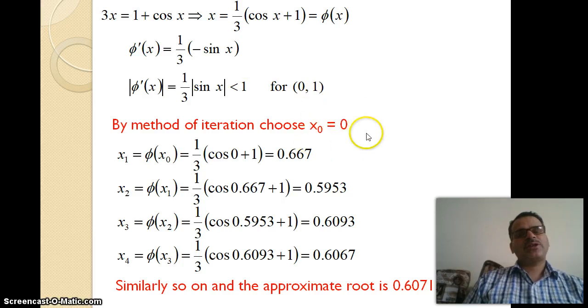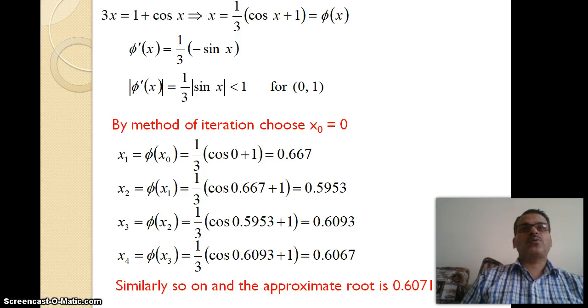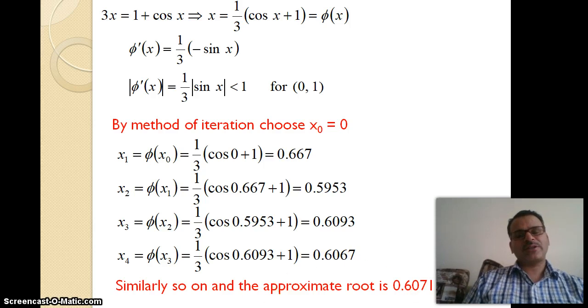φ'(x) = -sin x/3. This value in the interval 0 to 1 is always less than 1, since sin 0 = 0 and sin 1 < 1. By method of iteration, we choose x₀ = 0. Then x₁ = φ(x₀) = (1 + cos 0)/3 = 1/3(1 + 1) = 2/3. For the second approximation, x₂ = φ(x₁). Solving four iterations, we find the approximate root is 0.6071.